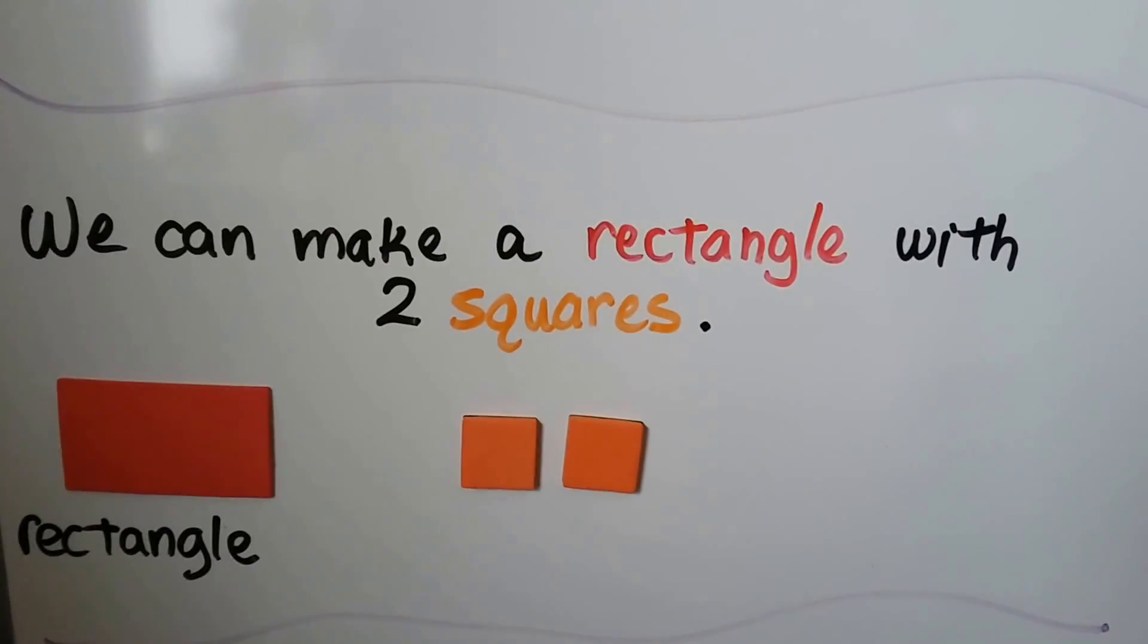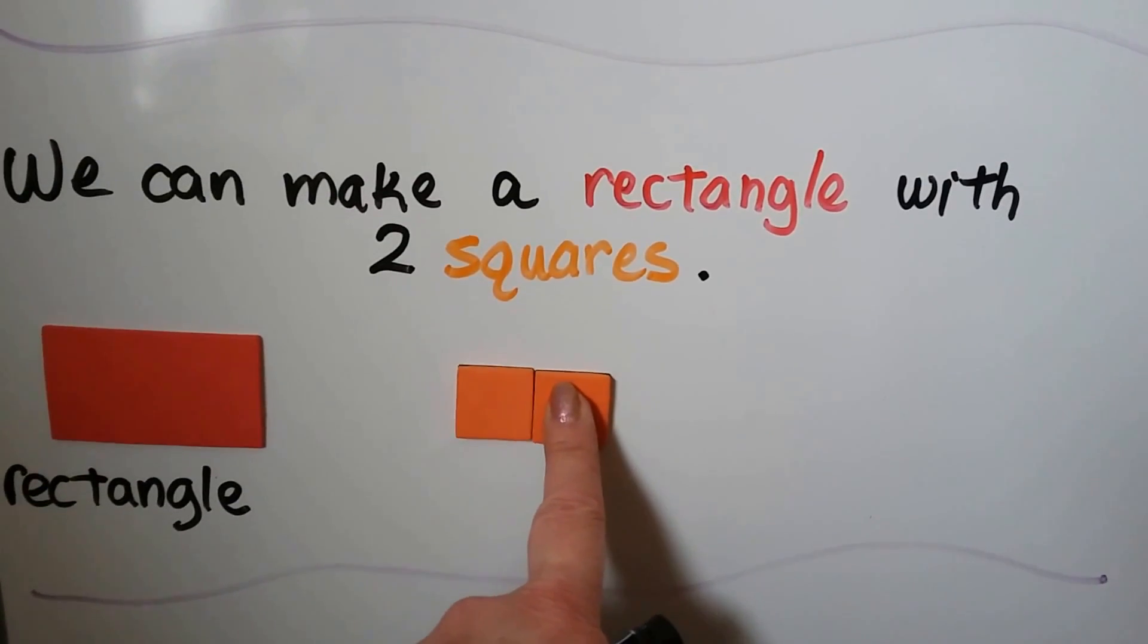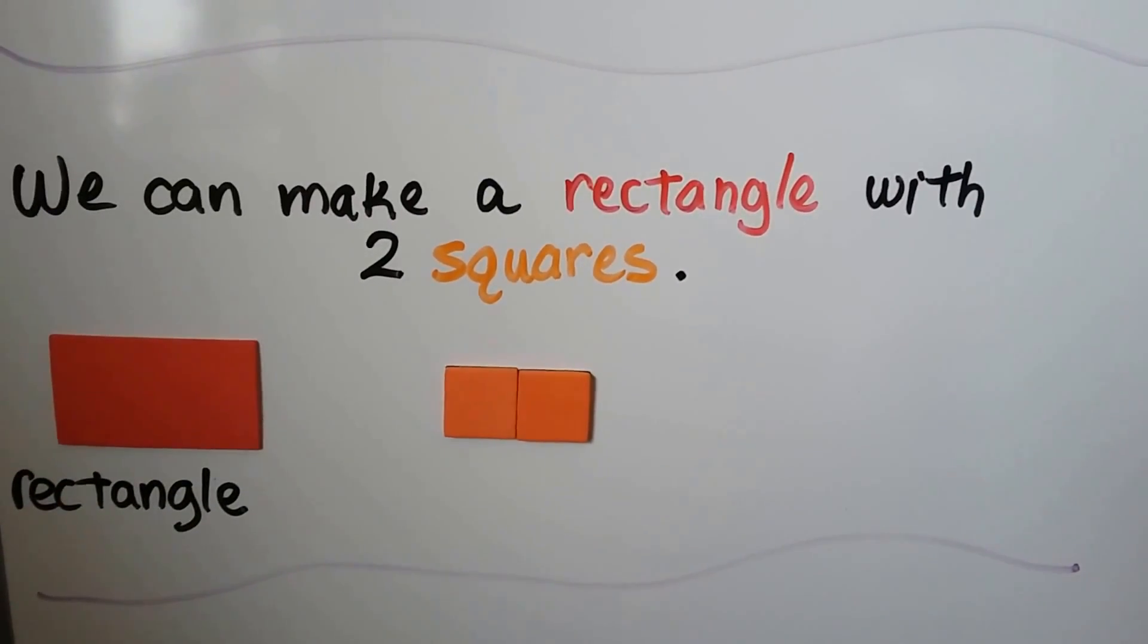We can make a rectangle with two squares. We can take two squares and put them together real close like that, and make a rectangle.